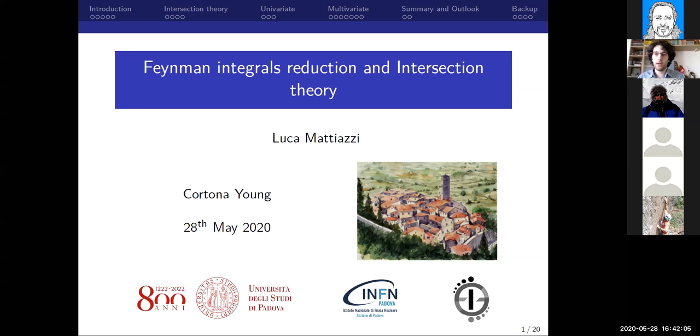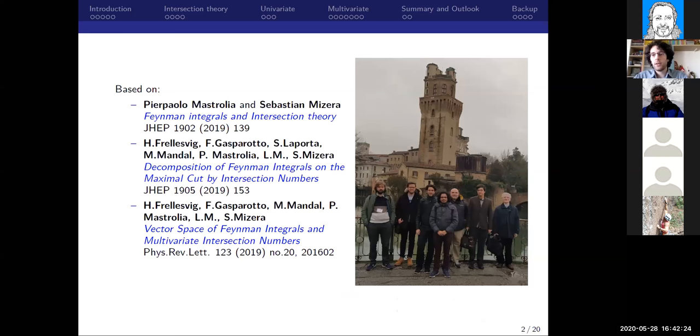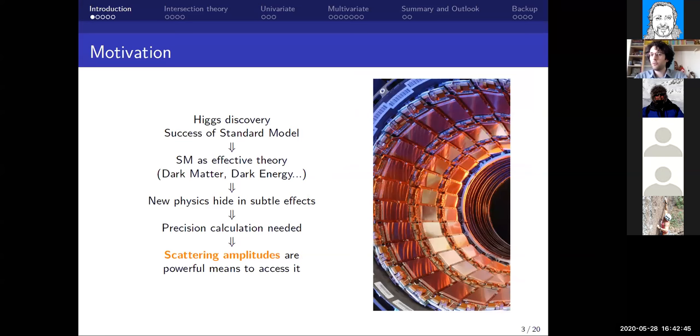I'm a student from Padova University and first of all I would like to thank the organizers for giving me this wonderful opportunity to talk here. Today I would like to talk to you about the connection between Feynman integrals and twisted intersection theory. This topic was first developed by my supervisor Mastrolia and Mizera from Princeton in a seminal paper, and then the whole group of which I'm part of from Padova joined them. You can see us in a picture on the right hand side.